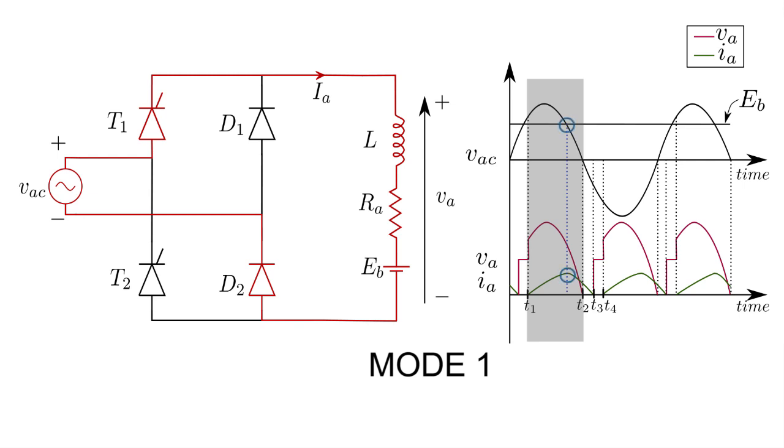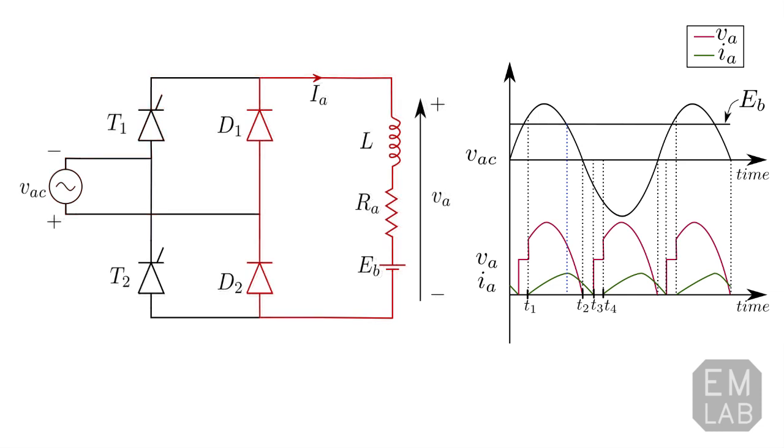Current starts to decrease after the instant where VAC equals Eb. This instant is represented by a blue dotted line. At T2, negative half cycle will begin. The current cannot continue the path through thyristor T1 and diode D2 since D2 will be reverse biased in this condition.